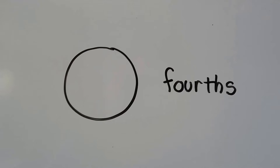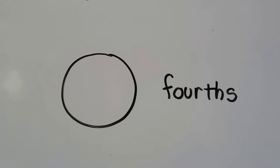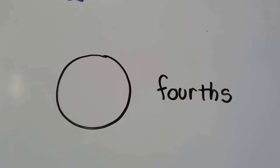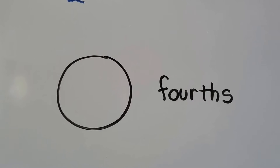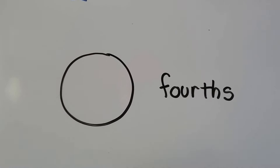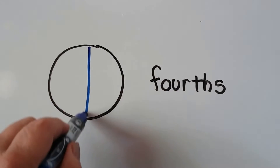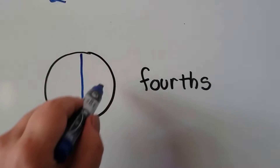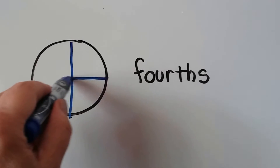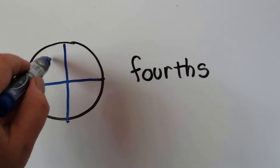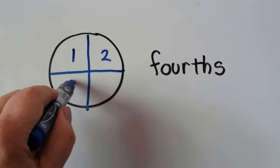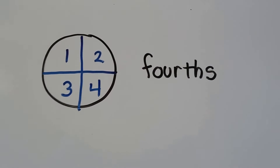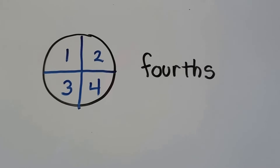What if we wanted to put lines in this circle to make fourths — four equal parts? We could draw a line this way, now we've got two equal parts. And if we draw a line this other way, now we have one, two, three, four equal parts. We've made fourths.